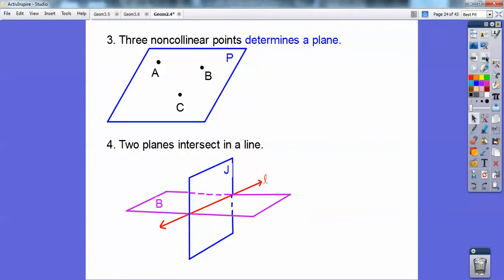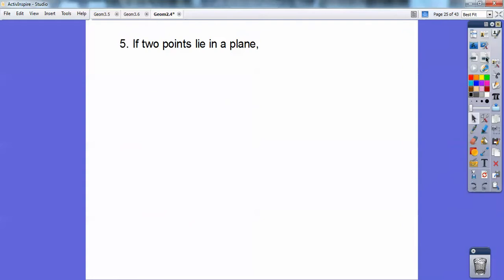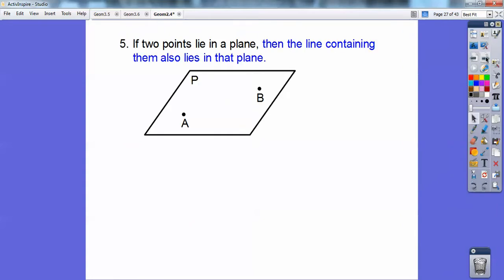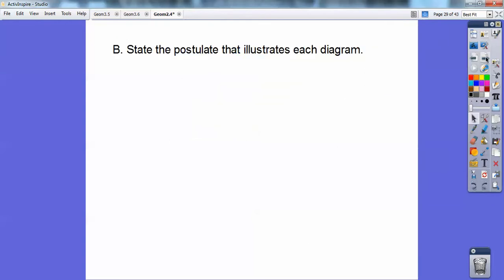All righty, so let's see what else. So if two points lie in a plane, see there's two points lying in a plane, then the line that contains them also lies in that plane. So that line that contains those two points is also in plane P. All right, state the postulate that illustrates each diagram. So there's two points, so if those two points, then that line goes through those two points, and so you can say through any two points, there's exactly one line or something to that effect.